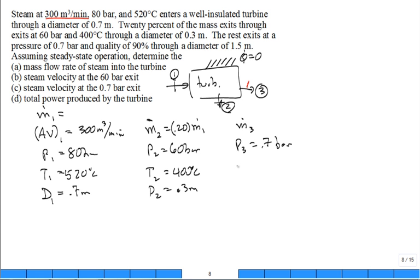So we also have the quality. Maybe I put X, let me, I put it down here. X3 is 90%. Why? Because I'm going to probably try and organize my information. T3 and D3 are probably given. And it's quality 90% through a diameter of 1.5 meter pipe. Assuming steady state operation determined for part A, the mass flow rate of steam into the turbine. So how do I find this mass flow rate of steam into the turbine? Well, the mass flow rate is the volumetric flow rate divided by the specific volume. True? Okay.